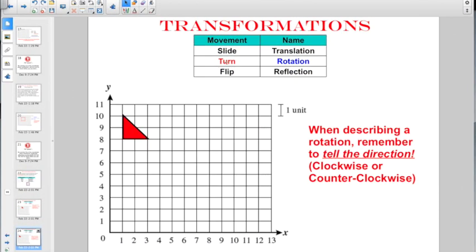The next movement we're talking about is a turn, but it's not really named turn. His technical name is rotation. When I actually do it, the verb form is rotate. When I rotate something, remember to tell the direction, either clockwise or counterclockwise. If you move something in the direction of a clock, this is a clockwise rotation. If I go the opposite direction of a clock, this is a counterclockwise rotation.